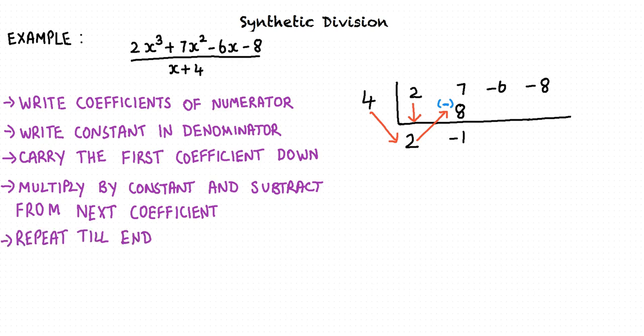Repeat the same process until you reach the last coefficient. In our example, we multiply 4 by -1 and we get -4. Next, we subtract -4 from -6 and we get -2. We multiply -2 by 4 and we get -8. We subtract -8 from -8 and we get 0.